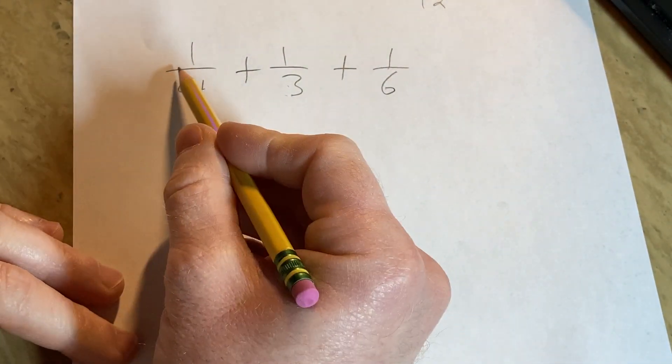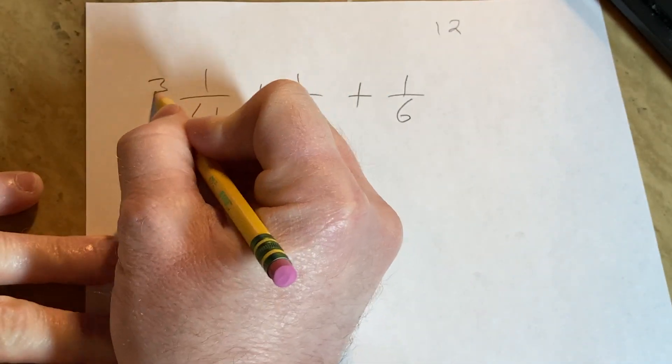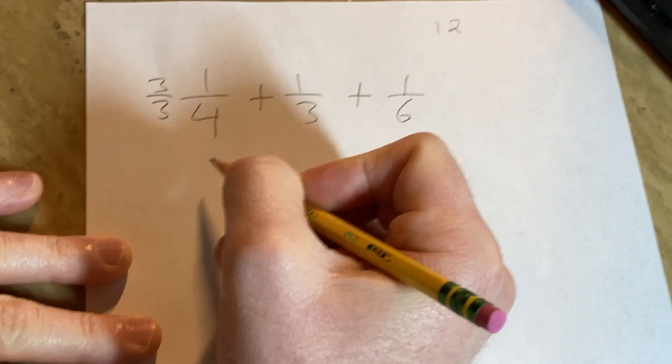Now what we're going to do is turn each of these into a 12. Here there's a 4, so we're missing a 3. You do 3 over 3, basically multiplying by 1.